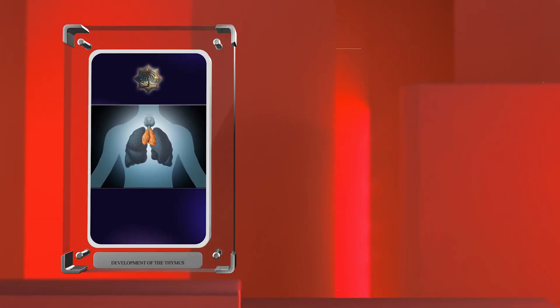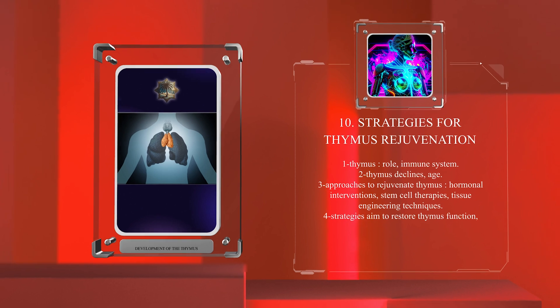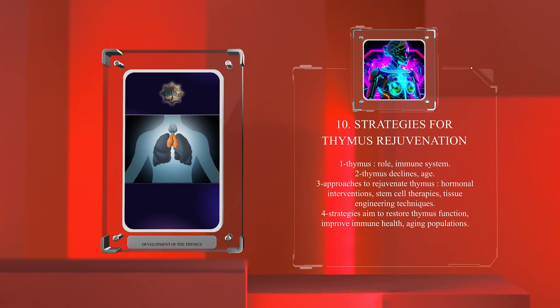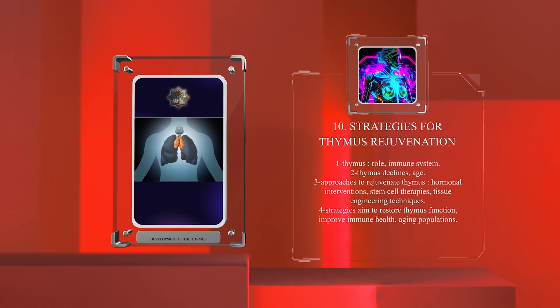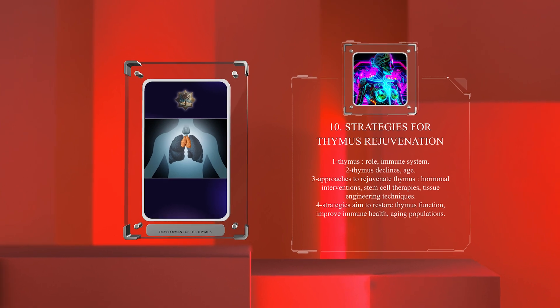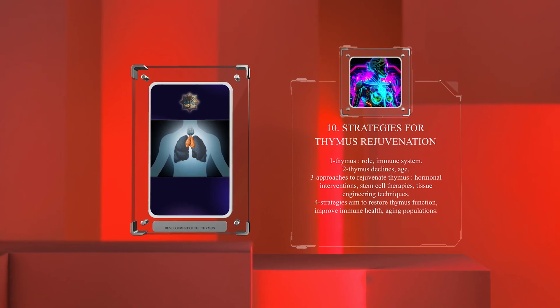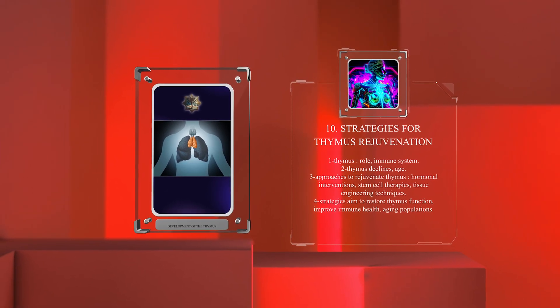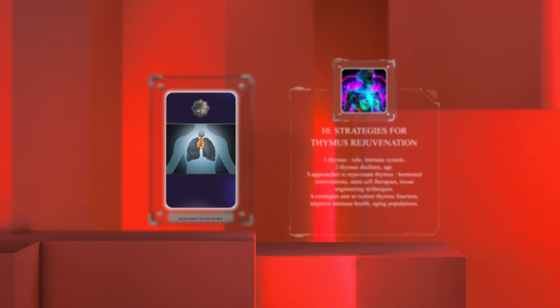The thymus plays a vital role in the immune system but declines with age. Various approaches to rejuvenate the thymus are being explored, such as hormonal interventions, stem cell therapies, and tissue engineering techniques. These strategies aim to restore thymus function and improve immune health in aging populations.